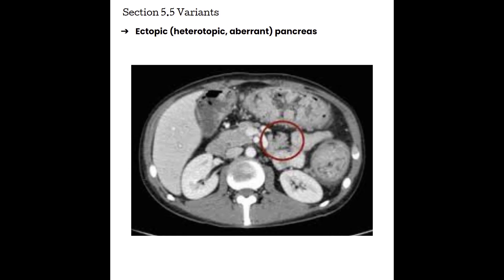Next we have the ectopic pancreas, also known as a heterotopic or aberrant pancreas. Basically with this variant, we'll see little bits of pancreatic tissue scattered throughout the GI tract. It doesn't have any ductal or vascular connection to the pancreas — it's just its own little blob. Because these little bits can be very small, it is actually very difficult for ultrasound to diagnose them. We do have an example on CT here in the red circle.